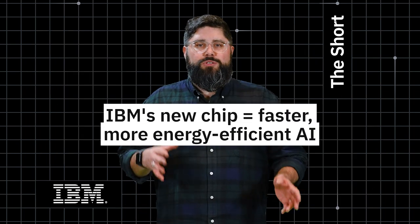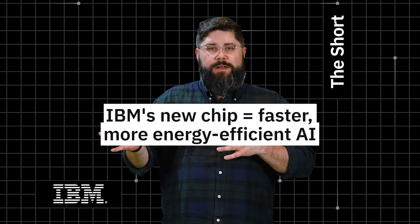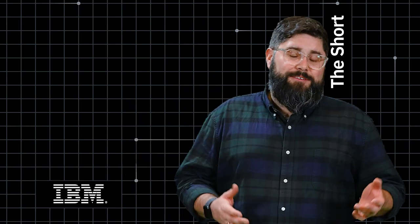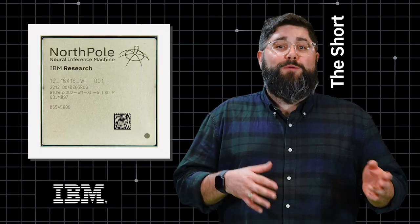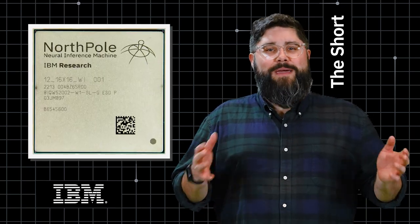And in case you missed it, IBM's new chip design points to faster, more energy-efficient AI. You know, it's that time of year again when people start thinking about the North Pole. But I'm not talking about the big guy in the red suit and the elves. North Pole is also the name of IBM's prototype AI chip.